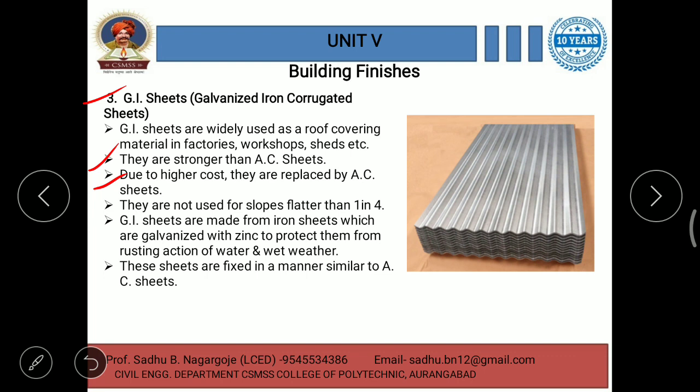GI sheets are not used for slopes flatter than one in four. They are made from iron sheets galvanized with zinc to protect them from the rusting action of water and wet weather. These sheets are fixed in a manner similar to AC sheets, and the fabrication or construction of GI sheets is also very similar to AC sheets.